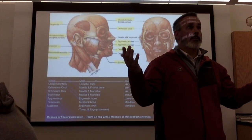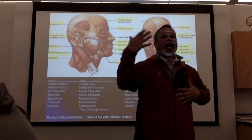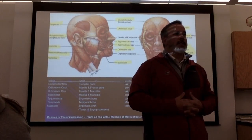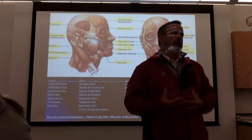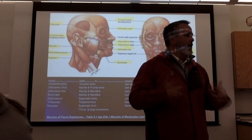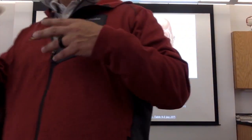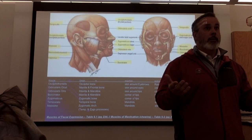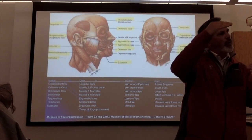Occipital frontalis originates from the occipital bone, inserts in the skin around the eyes, and raises the eyebrows. When I do demonstrated movements during the exam, I'll say which muscle does this movement — look at my face, look at my leg, look at my arm. I'll tell you where to focus, and then I'll say from here to here — that's the movement being made.